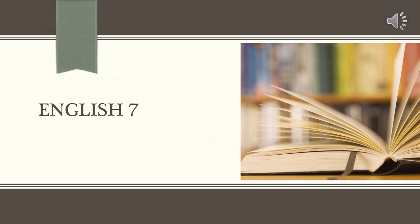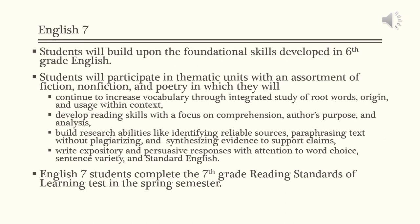English 7. In English 7, students will build upon the foundational skills developed in 6th grade English. Students will participate in thematic units with an assortment of fiction, non-fiction, and poetry in which they will continue to increase vocabulary through integrated study of root words, origin, and usage within context. They will develop reading skills with a focus on comprehension, author's purpose, and analysis. Build research abilities like identifying reliable sources, paraphrasing text without plagiarizing, and synthesizing evidence to support claims. And write expository and persuasive responses with attention to word choice, sentence variety, and standard English. English 7 students will complete the 7th grade reading standards of learning test in the spring semester.